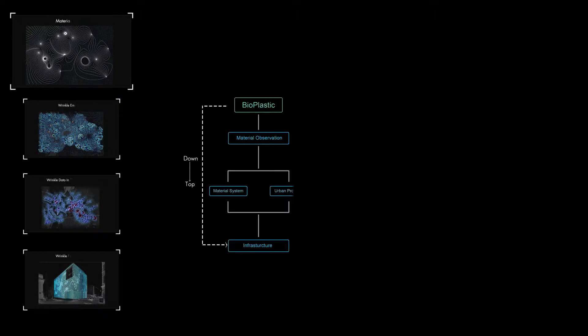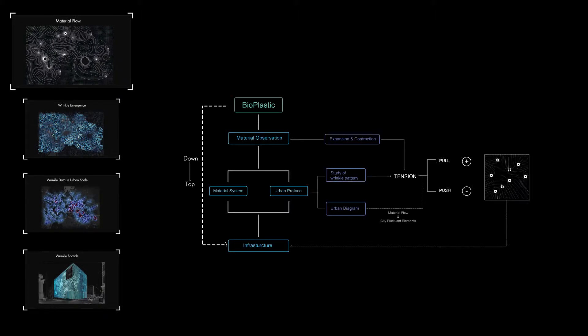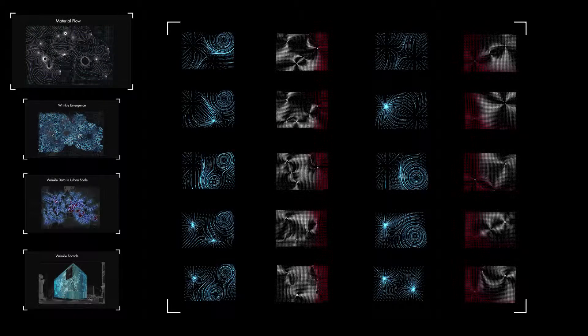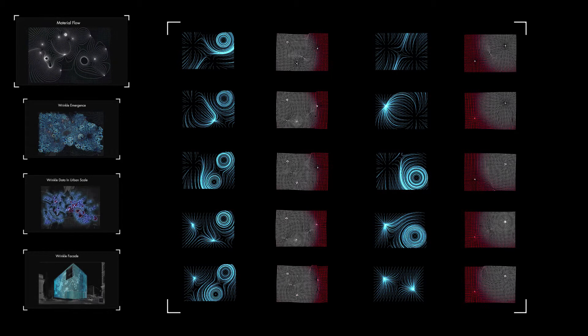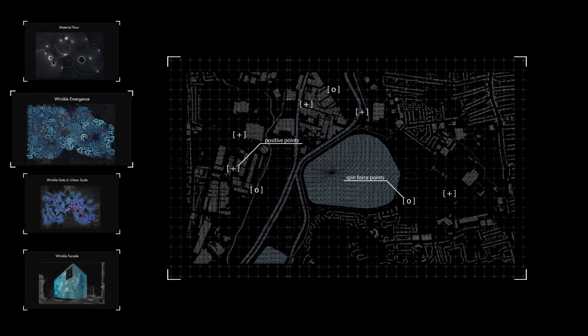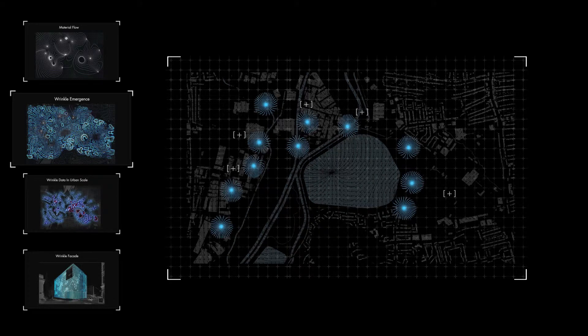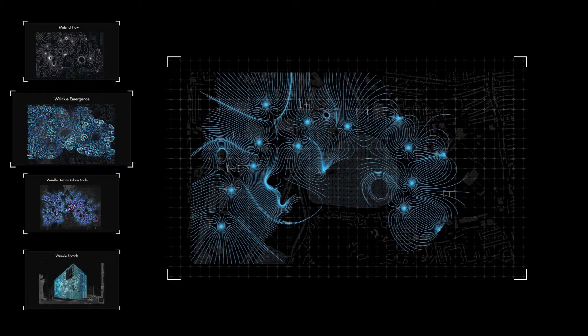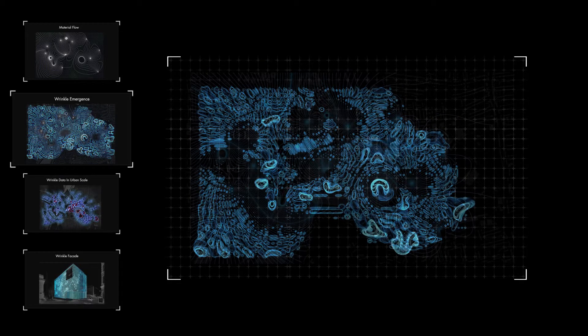The logic of wrinkle can be corresponded to urban functions. Wrinkle shows the dynamism of pulling and pushing forces, which could be extended as a new diagram for the urban. The field lines are connected by negative and positive poles. They can generate different wrinkle patterns dynamically.